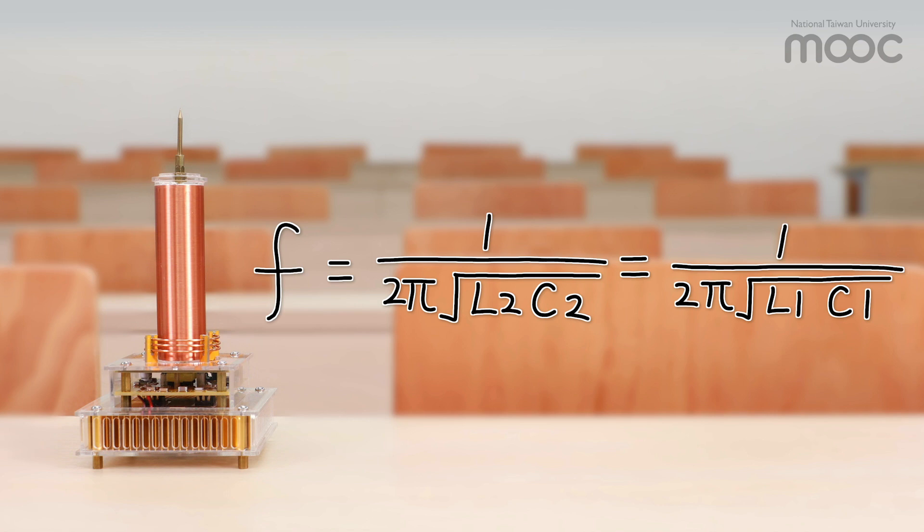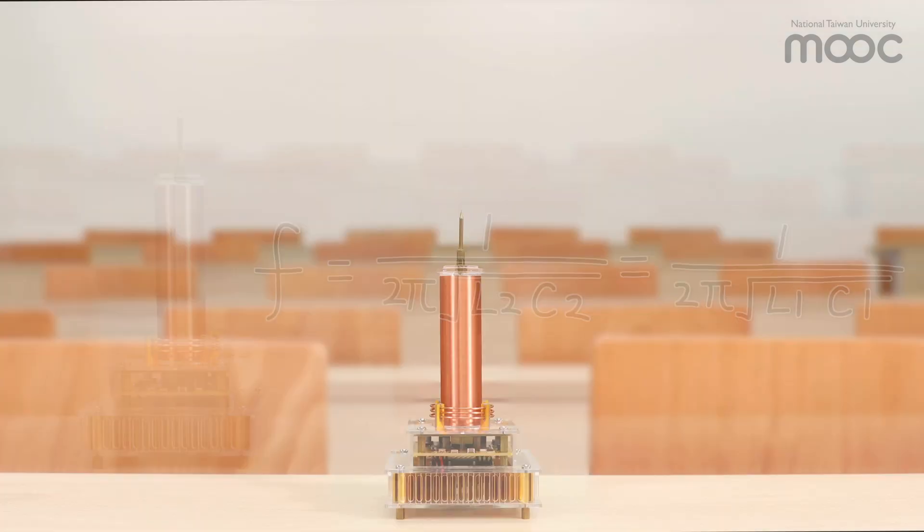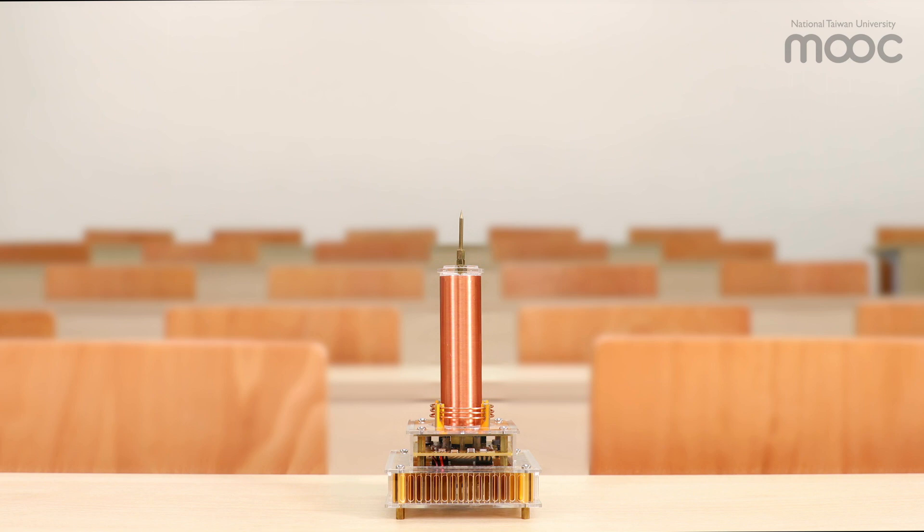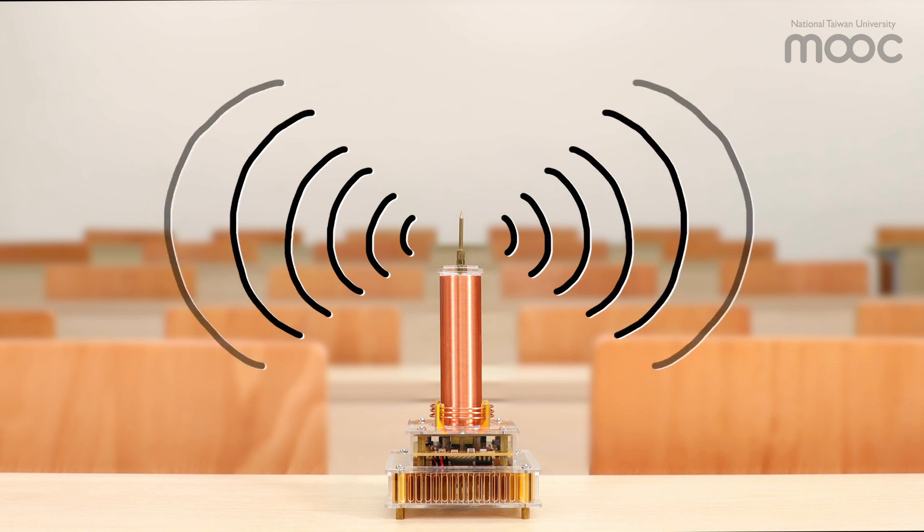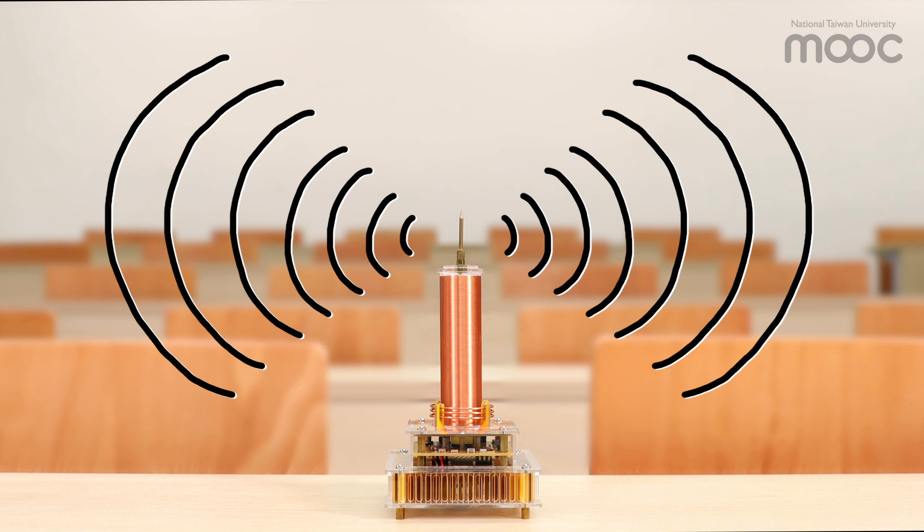With a high enough voltage, the air becomes visible plasma. In addition, the tip of the secondary coil becomes an antenna that transforms the electrical energy of the circuit into electromagnetic radiation at a resonant frequency.